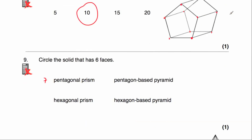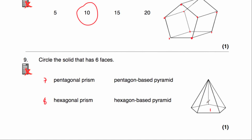Question 9: we're asked to circle the solid that has 6 faces. A hexagonal prism would have 8 faces — not 6. A pentagon-based pyramid has a pentagon on the bottom plus 5 triangles meeting at the apex — that's 1 plus 5 equals 6 faces. A hexagon-based pyramid would have 1 hexagon plus 6 triangles, giving 7 faces. So the correct answer is the pentagon-based pyramid with 6 faces.